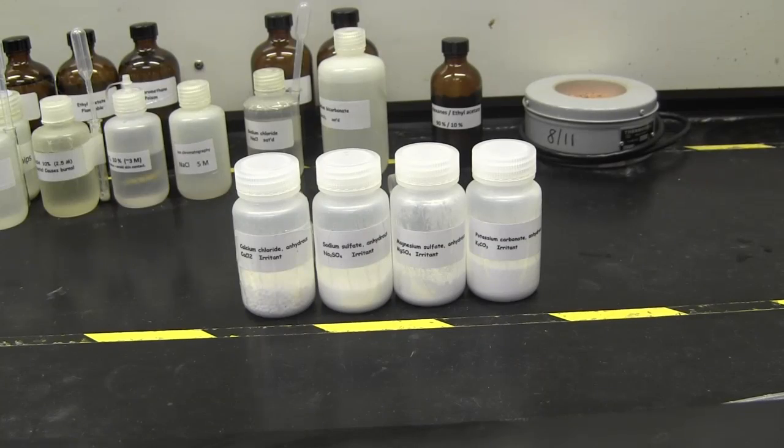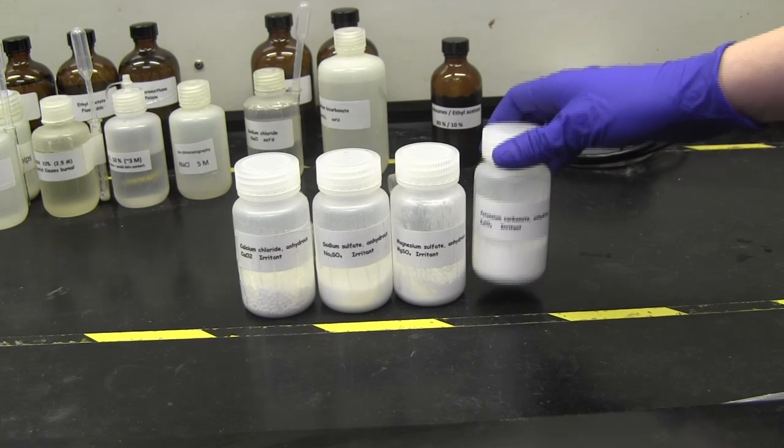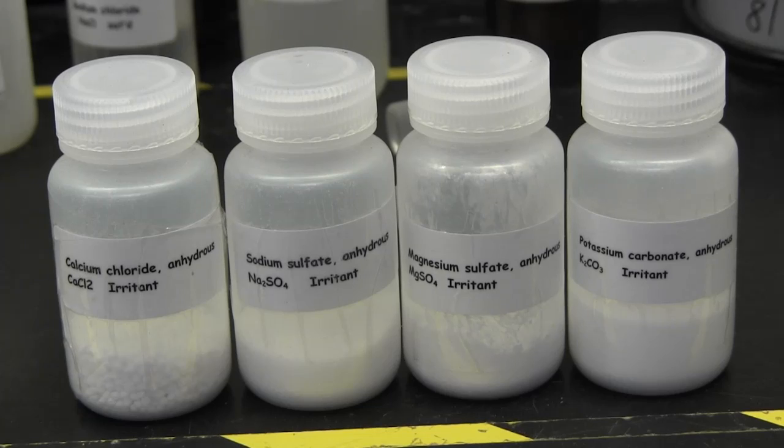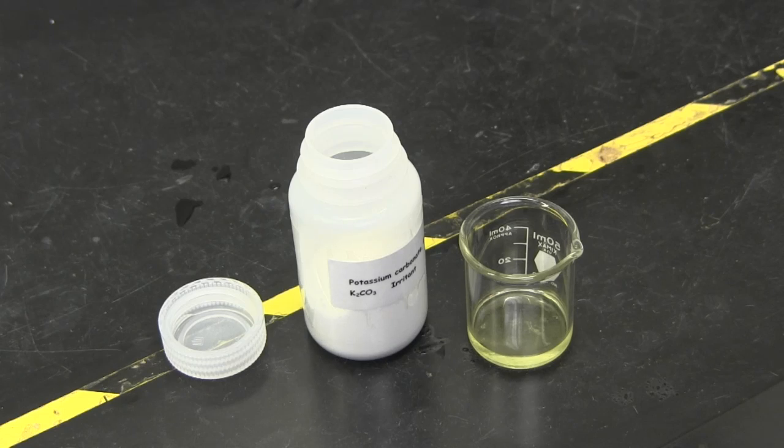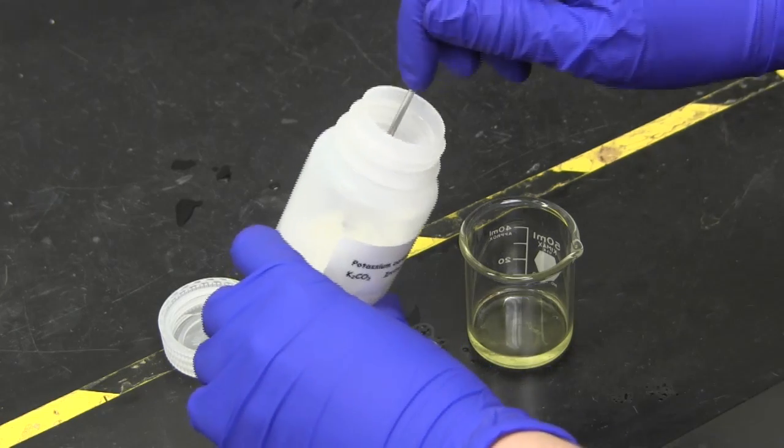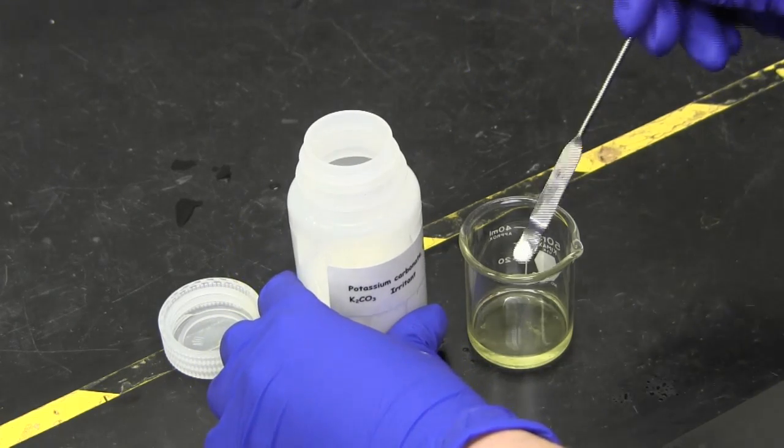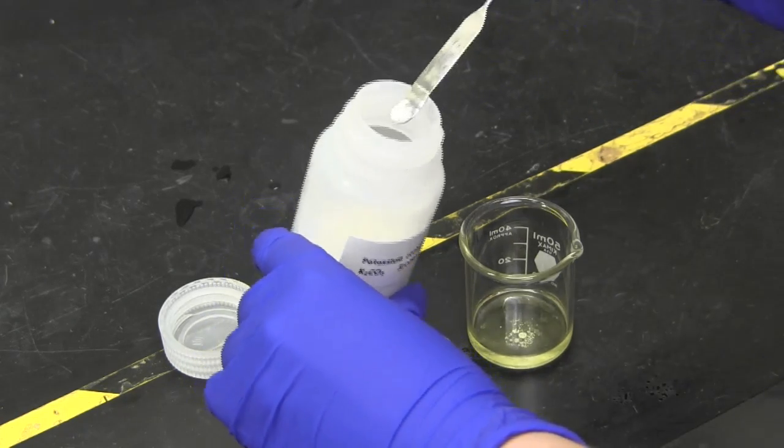Once you have your organic layer collected, add a drying agent. This will absorb any water in the solution. Drying agents include potassium carbonate, magnesium sulfate, sodium sulfate, and calcium chloride. Scoop small amounts of the drying agent into your solution to form a layer at the bottom. Allow it to sit for a few minutes.